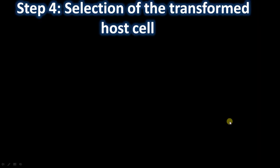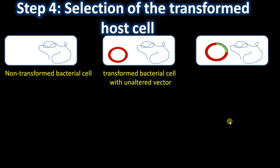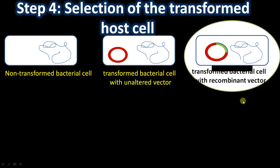Step four: selection of transformed host cells. After the transformation experiment, we will have three types of colonies: the majority will be non-transformed bacterial cells, then cells transformed with an unchanged vector, and the third type transformed with the recombinant vector — which is what we need to select. The first selection step is simply growing these on antibiotic-containing medium. Since the vector carries an antibiotic resistance marker, all growing colonies will carry the vector.